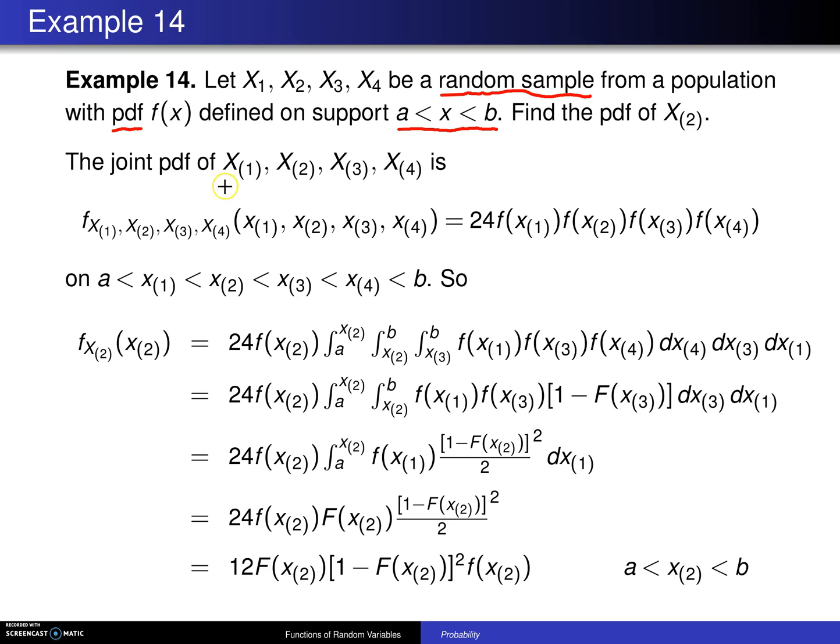So the joint probability density function of x1, x2, x3, and x4, the four order statistics, from a previous result, that joint probability density function is n factorial, which is 4 factorial, times the product of the population probability density function evaluated at the four order statistics. And that's defined on the order statistics, x1 through x4, in order, being between a and b.